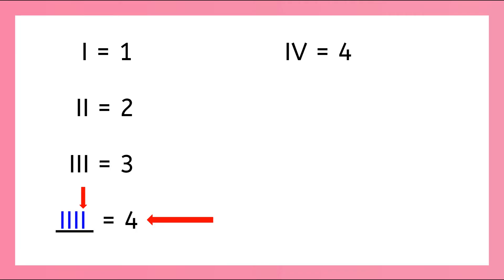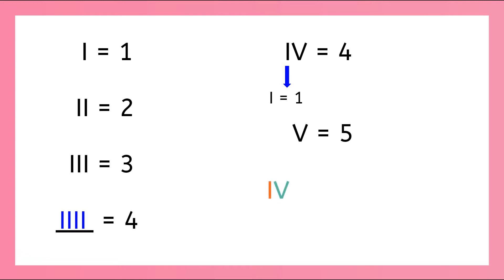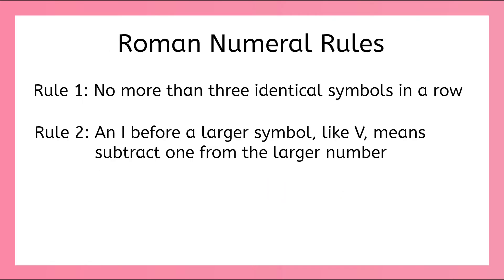So back to our symbol for 4, IV. We know that the I represents 1, but what does the V mean? V is the symbol for 5. By putting an I before V, what we're really saying is 5 take away 1. So this is another rule of Roman numerals: whenever we put an I before a symbol, what we're really saying is 1 subtracted from that number.